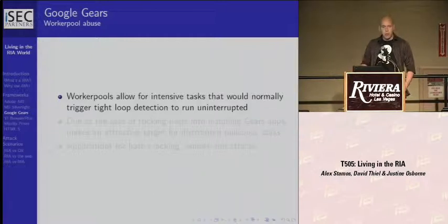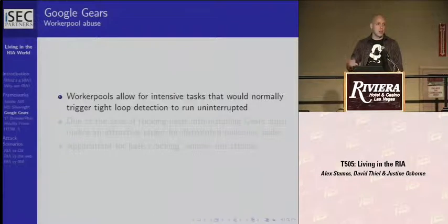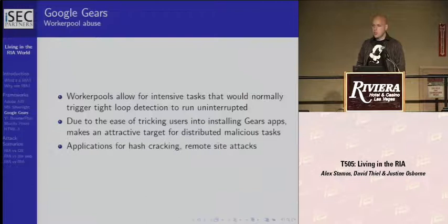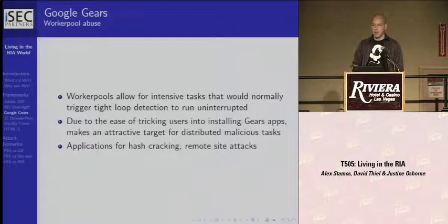With worker pools, because they don't lock up the UI or make your browser run slow, you can use them for things that would otherwise trigger Firefox's runaway script detection. Because it's so easy to get somebody to allow a site to use Gears, you can use this to push a bunch of hashes down to machines and do hash cracking. JavaScript is not the fastest way to crack hashes, but if you have an army of people coming to your website clicking yes and allowing you to use Gears, you can run this in the background. They go off and surf elsewhere, and you can serve up the answers when they come. This actually works reasonably well.